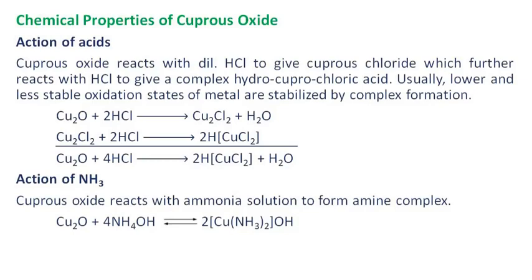Chemical properties of cuprous oxide — Action of acids: Cuprous oxide reacts with dilute hydrochloric acid to give cuprous chloride, which further reacts with hydrochloric acid to give a complex. Usually lower and less stable oxidation states of metal are stabilized by complex formation.